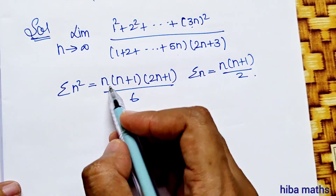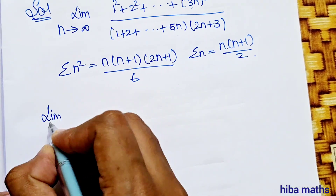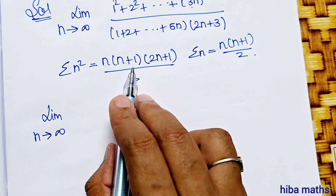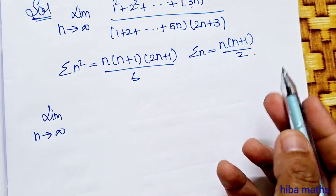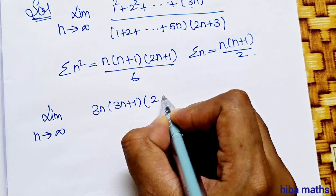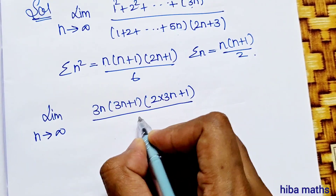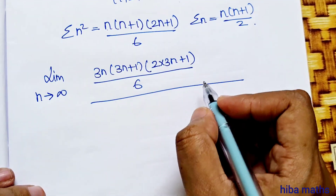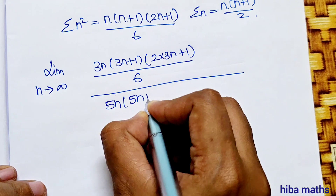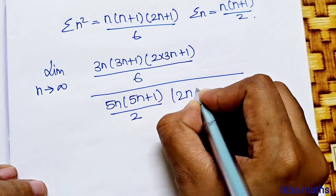For the numerator, substitute n with 3n. For the denominator, substitute n with 5n. So the limit becomes: 3n(3n+1)(6n+1) divided by 6, all divided by 5n(5n+1) divided by 2, times (2n plus 3).